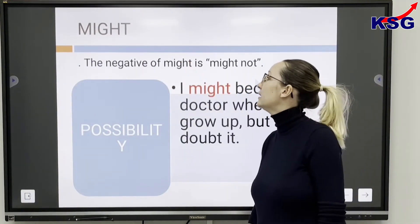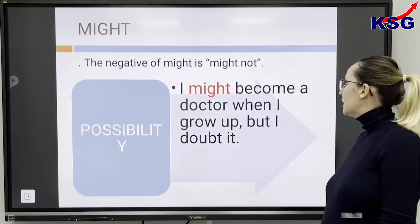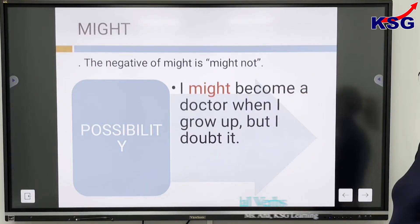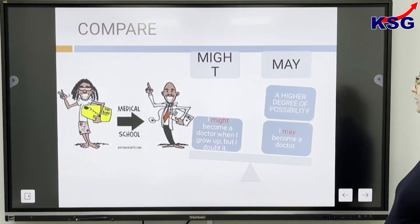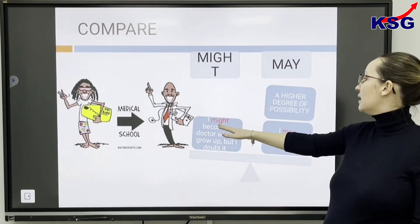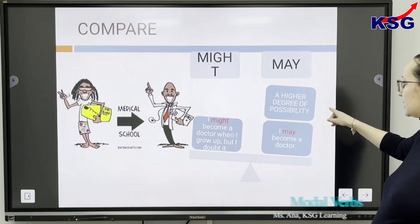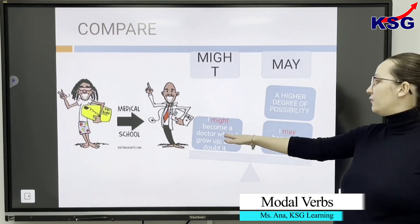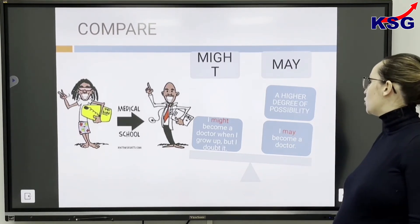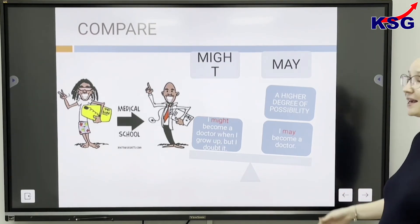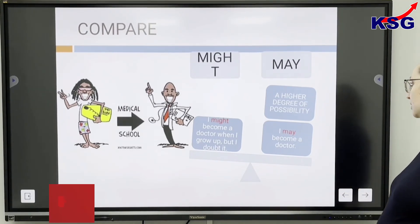Another modal verb is MIGHT. The negative of MIGHT is MIGHT NOT. It expresses possibility. For example: I might become a doctor when I grow up, but I doubt it. He is not sure — it is just a possibility. Comparing MIGHT and MAY: MIGHT expresses a smaller possibility, while MAY shows a higher degree of possibility. I MAY become a doctor — so it is quite possible in the near future that he or she is going to become a doctor.